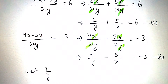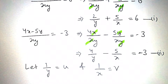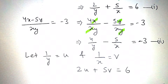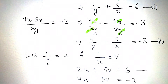Let 1/y equal u and 1/x equal v. Then the equations become: 2u plus 5v equals 6 (equation number 3), and 4u minus 5v equals minus 3 (equation number 4).